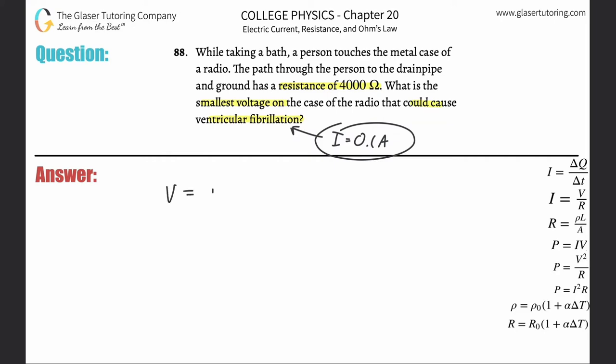Ohm's law is V equals I times R. Voltage is equal to the current multiplied by the resistance. So the current here is going to be 0.1 times the resistance of 4,000.